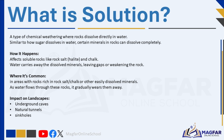Solution is a type of chemical weathering where rocks dissolve directly in water. Just like sugar disappears when stirred into a cup of water, some minerals in rocks can dissolve completely when they come into contact with water. This process affects rocks that are soluble, such as rock salt or chalk. Over time, the water carries away the dissolved minerals, leaving gaps or weakening the rock structure. This kind of weathering is especially common in areas with rocks made mostly of calcium carbonate or other easily dissolved minerals.